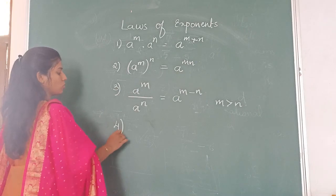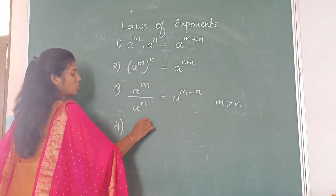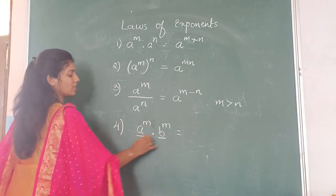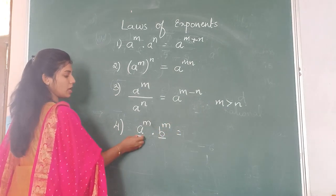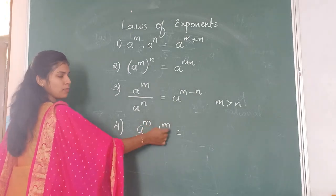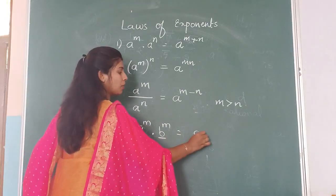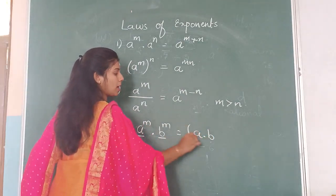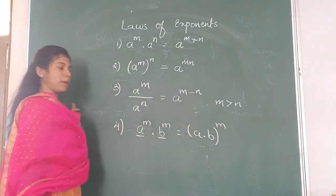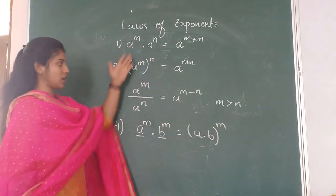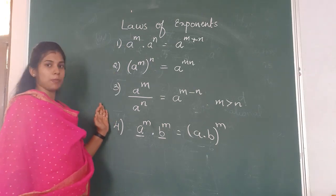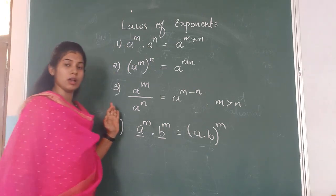The fourth law: A raised to M into B raised to M. Here the bases are different — A and B — but the powers are the same, M. In that case we multiply the bases and keep the common power: A into B, whole raised to M. These are the four laws of exponents, which we will use to solve problems from real numbers.